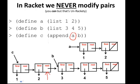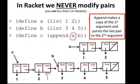So here I still didn't make any changes to any pairs. Whenever I needed to modify what something pointed to, I made a new pair. So append makes a copy of the first argument and points the last pair to the second argument.